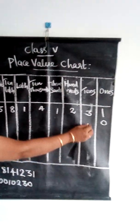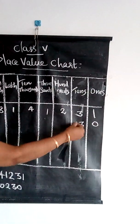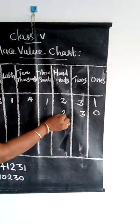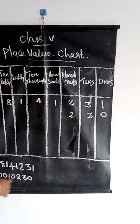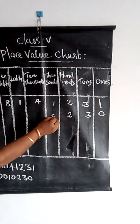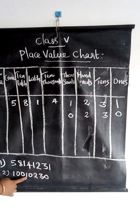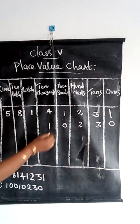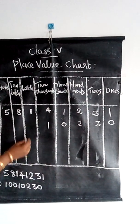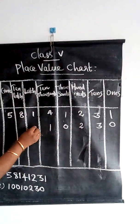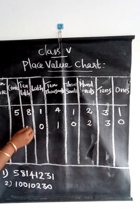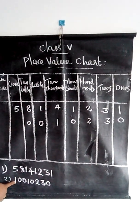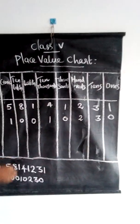Tens place is 3, hundreds place is 2, thousands place is 0, ten thousands place is 1, lakh place is 0, ten lakh place is also 0, and in the crore place it is 1.